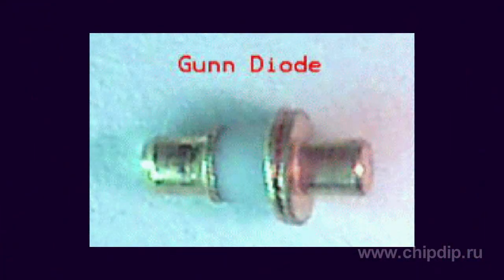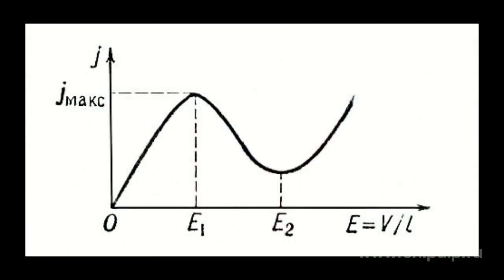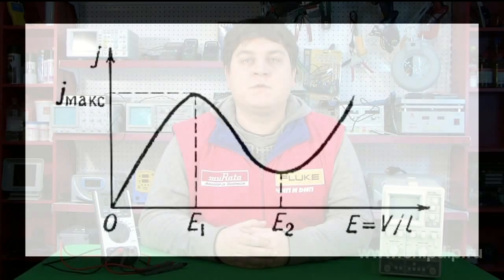A Gunn diode is a semiconductor device based on the Gunn effect. The Gunn effect is the generation of high-frequency vibrations of electric current in a semiconductor with an N-type voltage-current characteristic having sectors of negative differential resistance. The effect was first discovered by the American physicist Gunn in two semiconductors with electronic conductors.